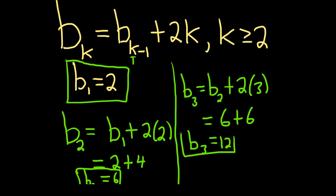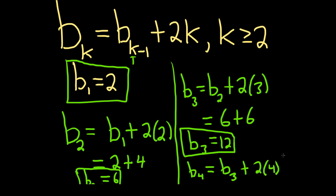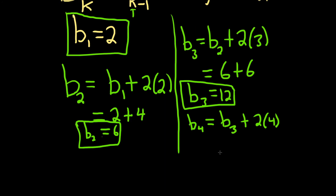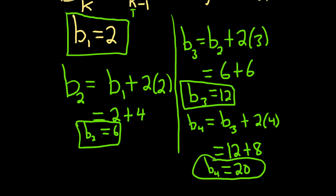The last one is b sub 4. We replace k with 4, giving us b sub 3 plus 2 times 4. b sub 3 is 12, so this is 12 plus 8, which gives us 20. So b sub 4 is equal to 20. And that's how you find the first four terms in this recursive sequence.